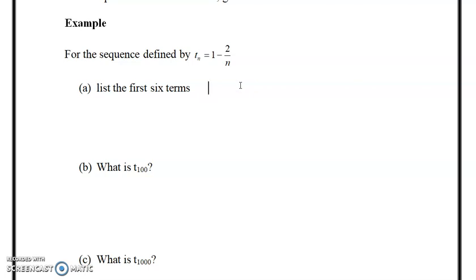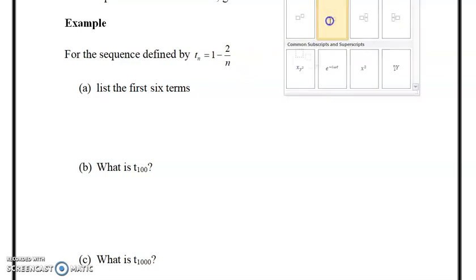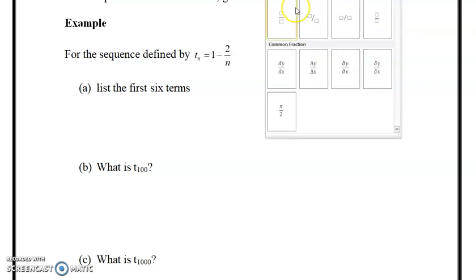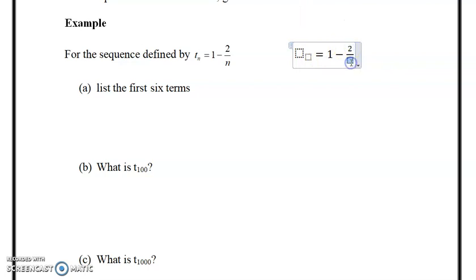So let's look at the first example. The sequence is defined by t_n equals 1 minus 2 over n. List the first six terms. So basically you're just plugging the numbers in, right? I'll do an example calculation. I'm not going to do them all.